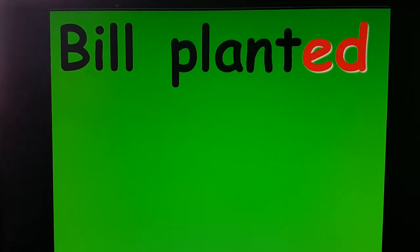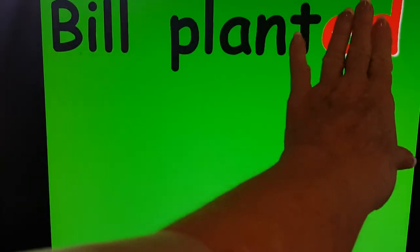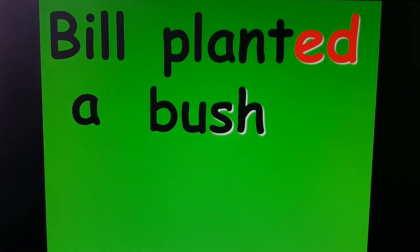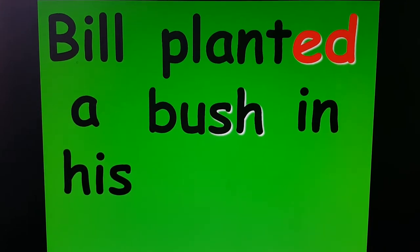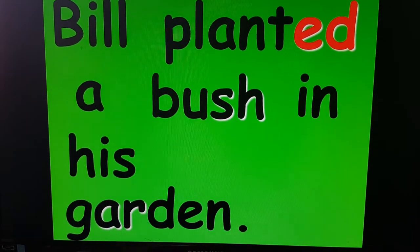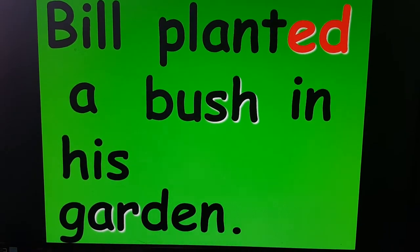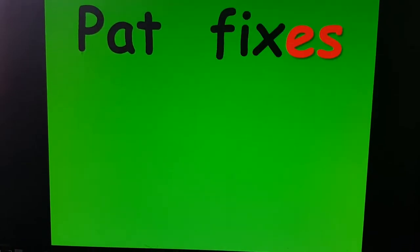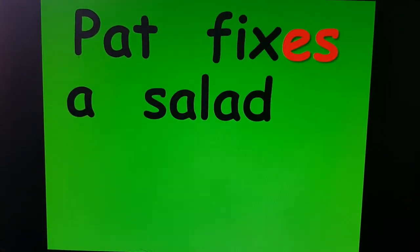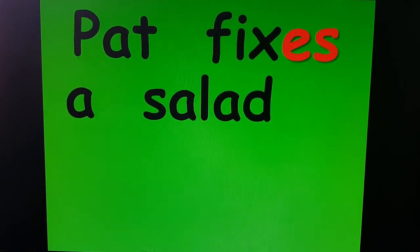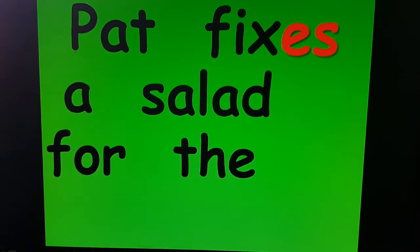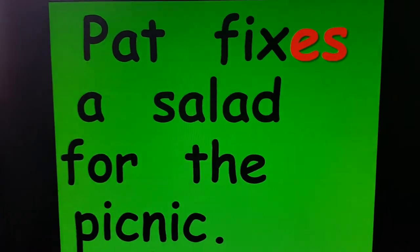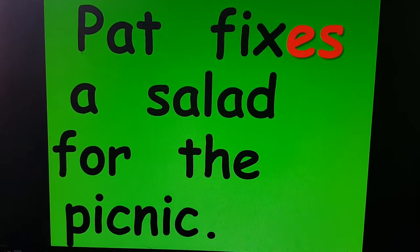Let's do a sentence. Remember, ED means it already happened. PLANTED. BUSH. GARDEN. Read the whole thing: Bill planted a bush in his garden. Pat fixes a salad for the picnic. Read the whole thing: Pat fixes a salad for the picnic.